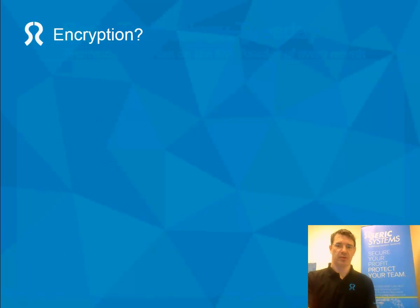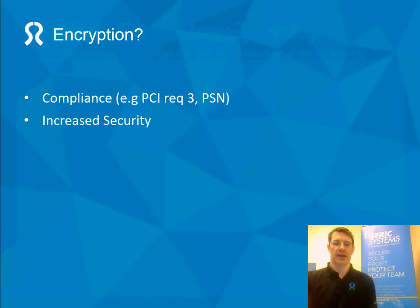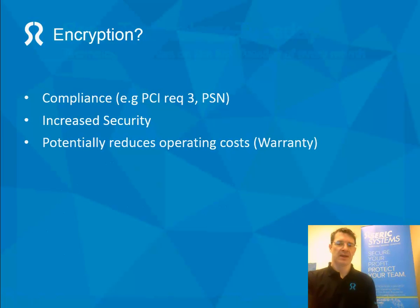So let's look at encryption. Why do we need it? Primarily it's for compliance — if you're regulated, PCI Requirement 3 is all about encryption, or PSN and similar frameworks. It also obviously increases your security. It can be marketed as a competitive advantage depending on your business — you might not be regulated, but you can use it to show you're better than others.